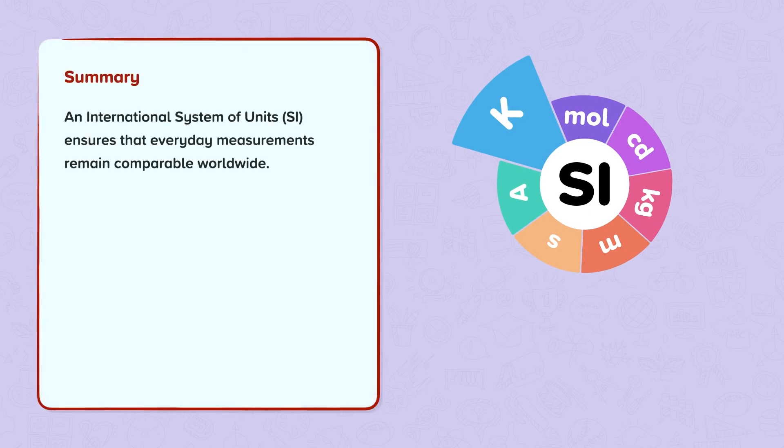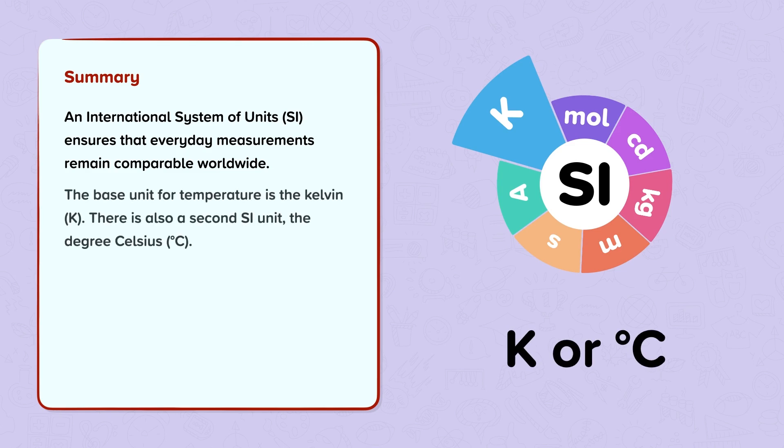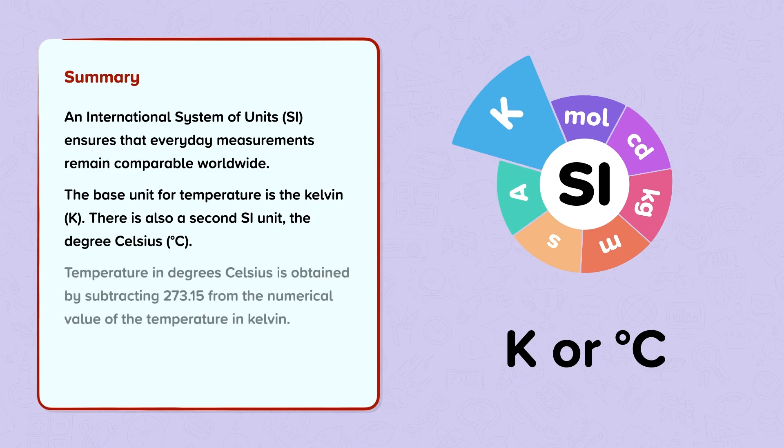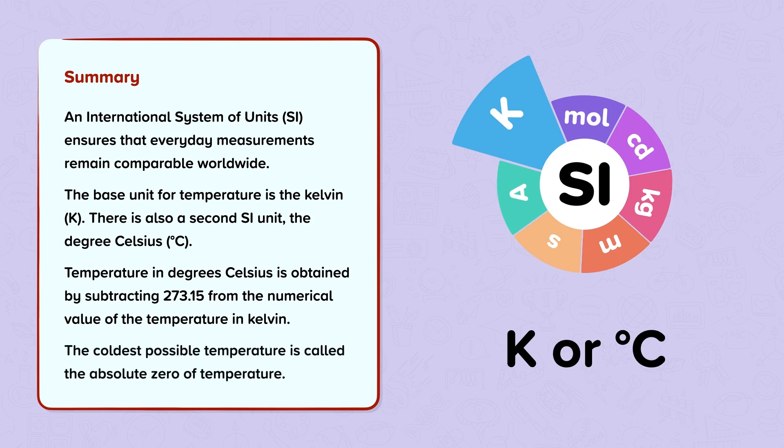Summary. An international system of units, SI, ensures that everyday measurements remain comparable worldwide. The base unit for temperature is the kelvin, or K. There is also a second SI unit, the degree Celsius, degree C. Temperature in degrees Celsius is obtained by subtracting 273.15 from the numerical value of the temperature in Kelvin. The coldest possible temperature is called the absolute zero of temperature.